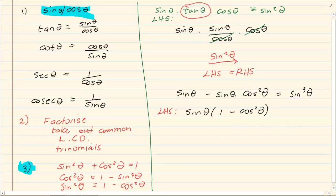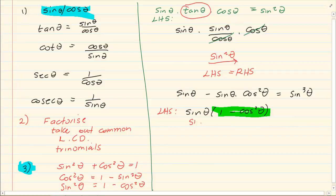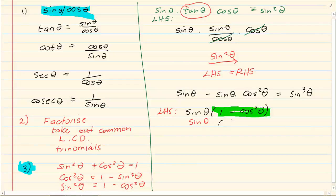Now we have sin theta times the quantity 1 minus cos squared theta. Looking back at our identity, 1 minus cos squared theta is equal to sin squared theta. So in place of 1 minus cos squared theta, we put sin squared theta, which gives us a final answer of sin cubed theta. Left hand side equals right hand side.